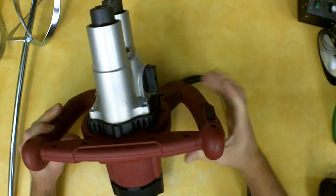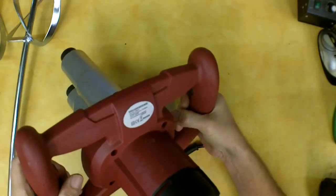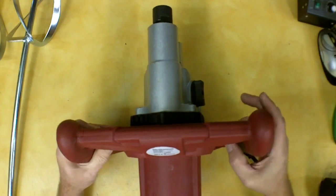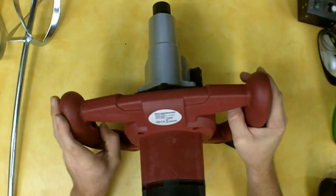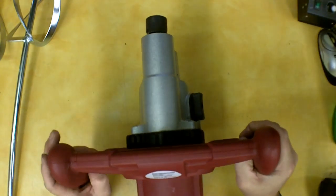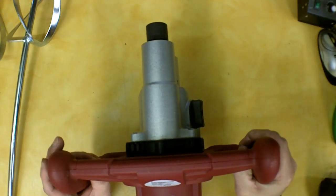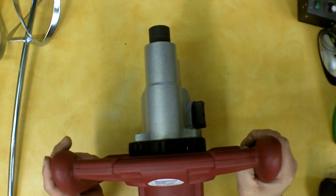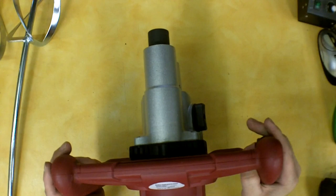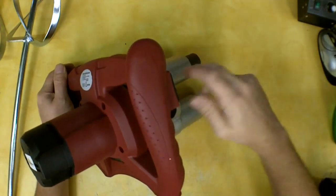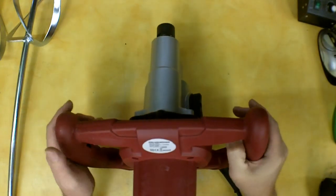The trigger is right here on this side and there is a button that you need to push, a safety, to get it to turn on. So I'll go ahead and just turn it on as I'm sitting here and I'll run through the speeds both low and high. So that's low, then I'll switch it into the high gear and I'll do the same thing.